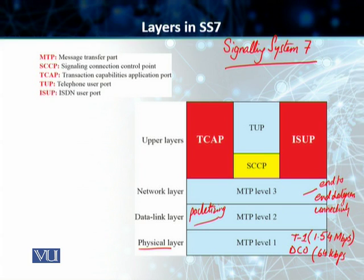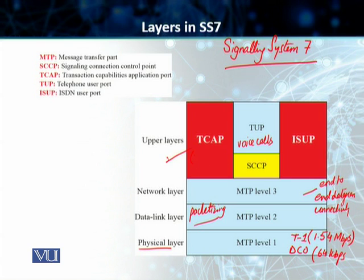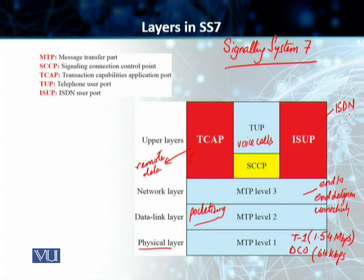Then you have the upper layers. Your Telephone User Part, or TUP, is responsible for setting up voice calls. Then you have TCAP — Transaction Capabilities Application Protocol — which provides remote calls that let an application program on one computer invoke a procedure on a different computer, enabling remote data connectivity. Then there is ISUP — ISDN User Part — which replaces the Telephone User Part to provide services similar to an ISDN network as required.